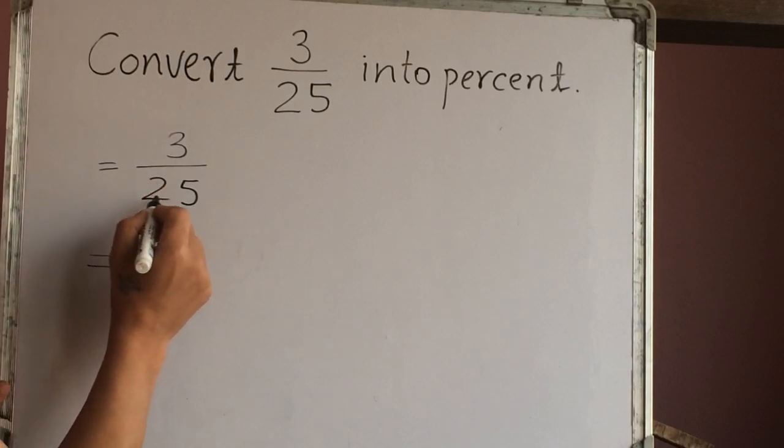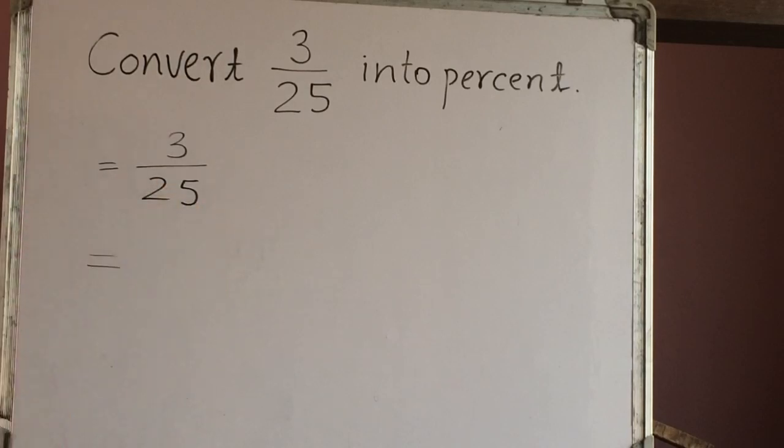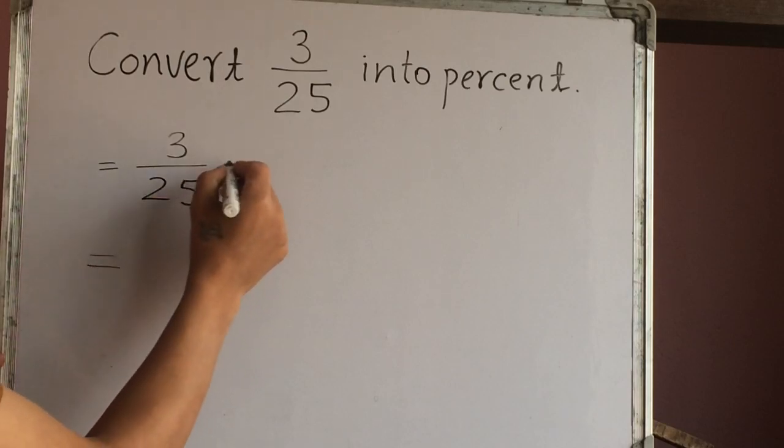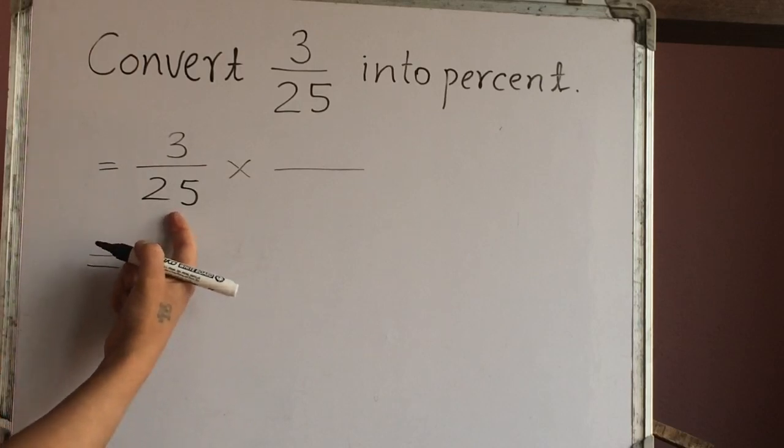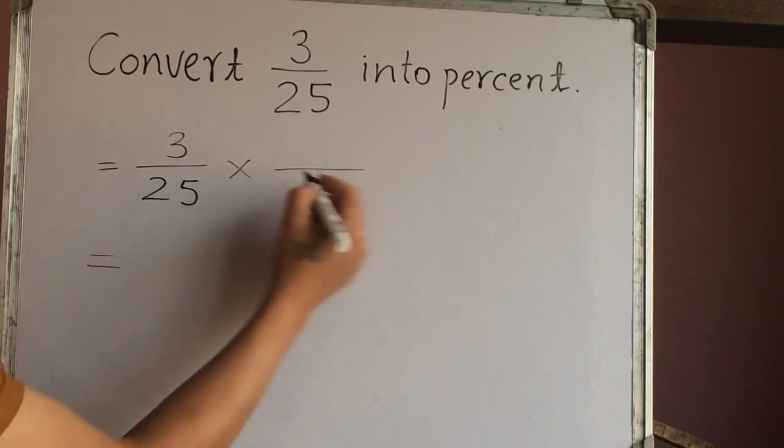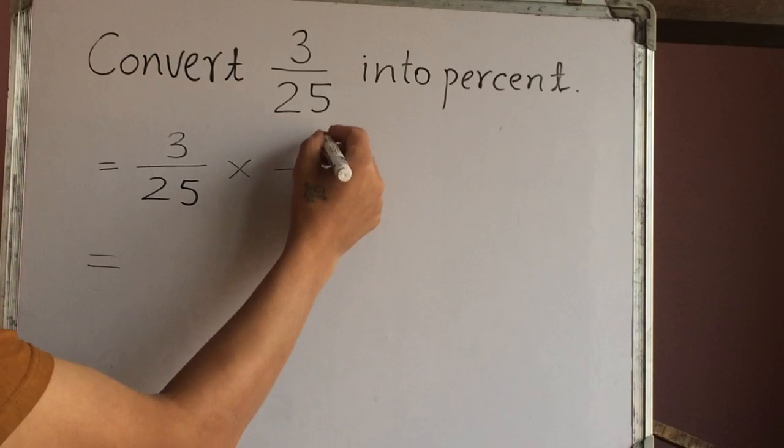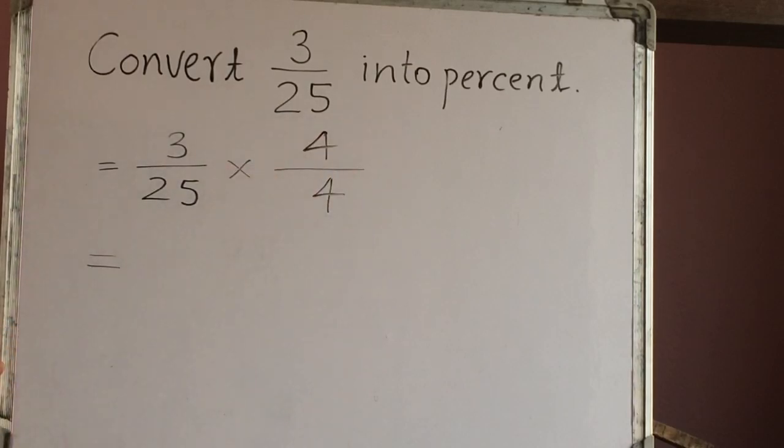Now how can we make this 100 out of 100? You can multiply here. How can we make this 100 denominator here? So 25 times 4 is 100. So just multiply 4.